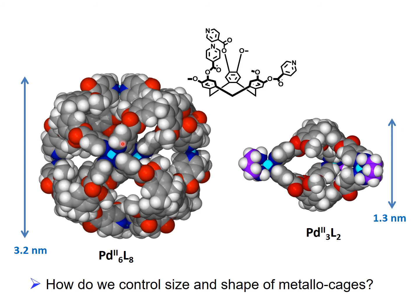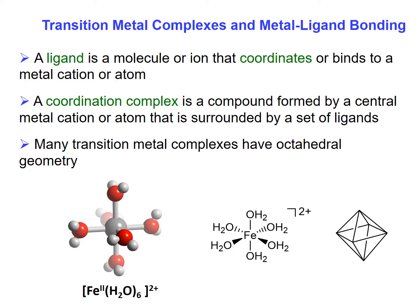But how do we control this? How do we know we're going to build a big cage or a little cage according to what we want to do with the cages? To address that, we need to step back and talk about the sorts of compounds these are — coordination complexes, or transition metal compounds.